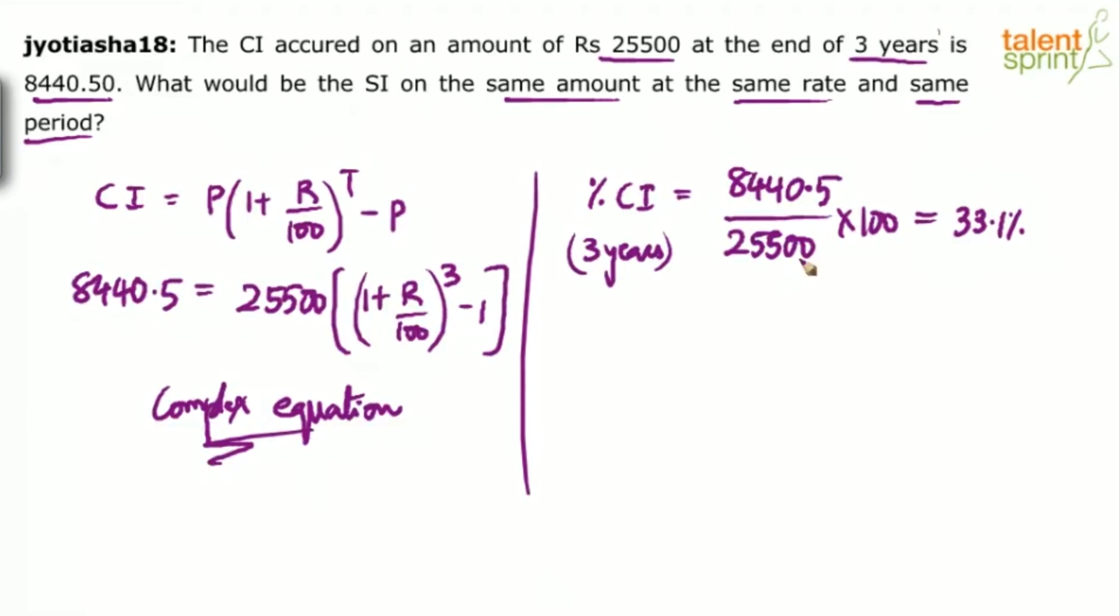It is only when the rate of interest is 10. See, 10, 10, and 10. The effective of these two will give you 21 percentage. These are rates of interest for three years. And then when you apply 21 and 10 on these two values, how much will you get? 21 plus 10 plus 21 into 10 by 100. This comes out to be 33.1.